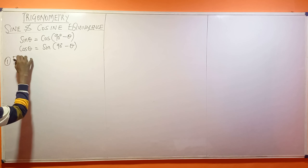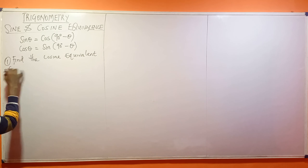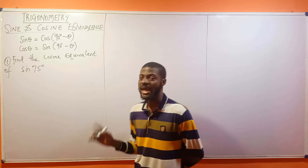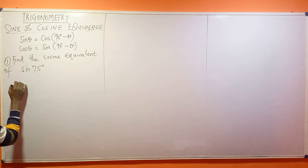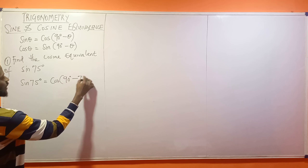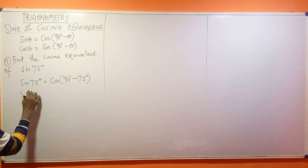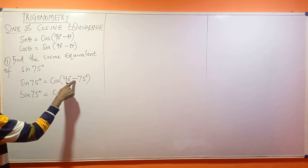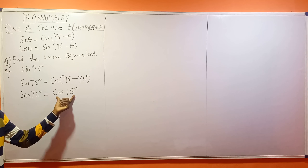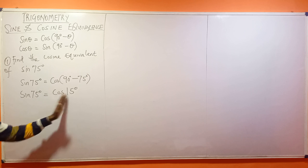Question one: Find the cosine equivalent of sine 75 degrees. First things first — sine 75° is going to be equal to cos(90° − 75°). Whatever angle you have with sine, you subtract that angle from 90. So sine 75° = cos(90° − 75°) = cos 15°. That's the answer: sine 75 equals cos 15. Check: 75 plus 15 is 90. This is how you convert from sine to cosine.